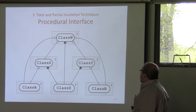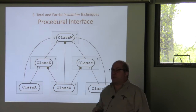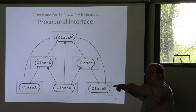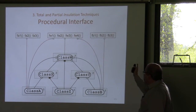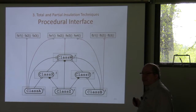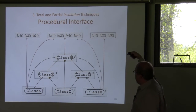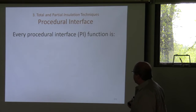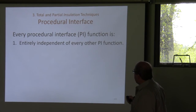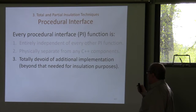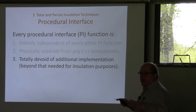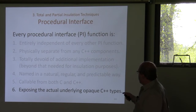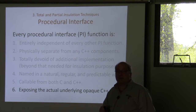The procedural interface is designed to interface with C, but it's also a very sterile way of interfacing with an arbitrarily complex system. You create all these functions at a high level — all at the same level, none interacting with each other — all calling into your object-oriented subsystem. The procedural interface is entirely independent of every other PI function, physically separate from any C++ components, totally devoid of additional implementation beyond what's needed, named in a natural, regular, and predictable way, callable from both C and C++, and exposes the underlying types from the C++.